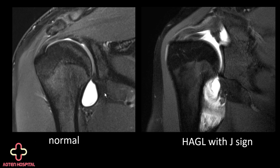Then we have the HAGL lesion, which is a humeral avulsion of the glenohumeral ligament, meaning that the inferior glenohumeral ligament is avulsed from the humeral attachment. You can appreciate this here — we have the same structure, but it's frayed and torn, and it should actually belong up here, but it's torn.